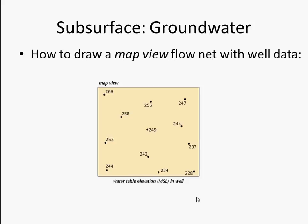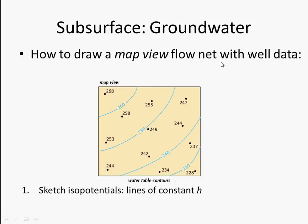The first thing you would do when looking at this map is try to figure out where to draw a line — for example, for the 260 elevation of the groundwater, which might go right through here. You would do that for consistent intervals: maybe 260, then 250, then 240, and so on. That might end up looking something like this — that's sketching the isopotentials, the lines of constant hydraulic head.